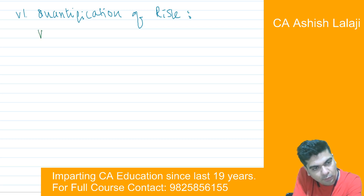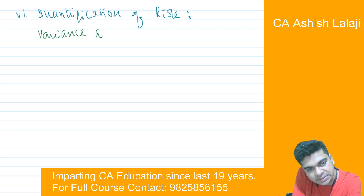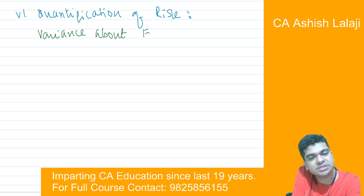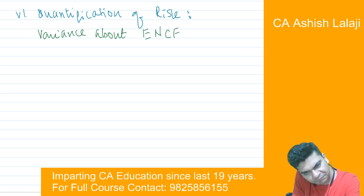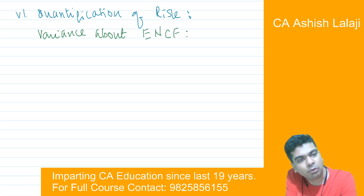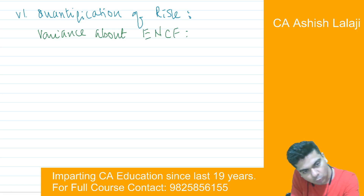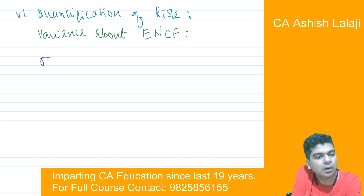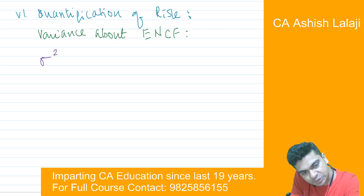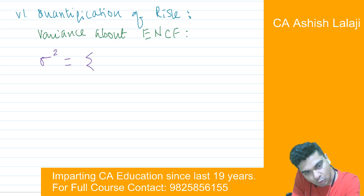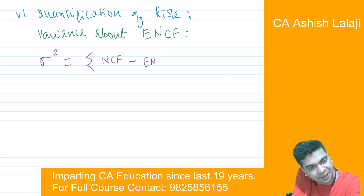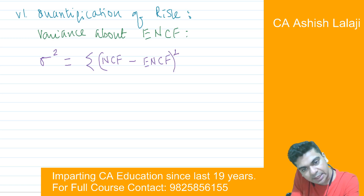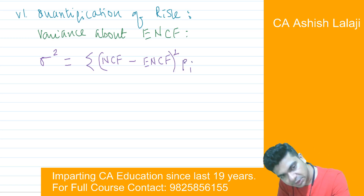We say variance about expected net cash flow. Our formula will be: sigma squared equals the summation of (net cash flow minus expected net cash flow), squared, multiplied by the probability.